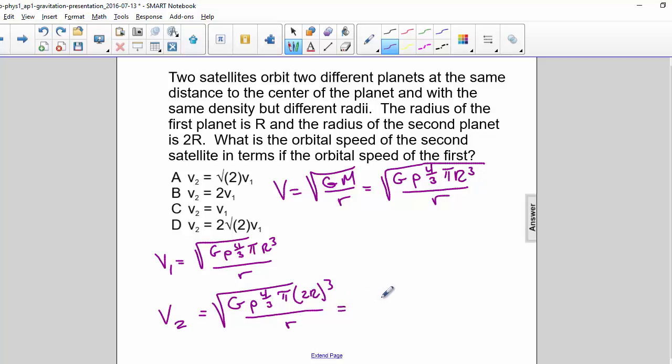So let's factor out the square root of 2 cubed and the rest of that would just be v1. So the square root of 2 cubed is equal to 2 times the square root of 2. So the correct answer is d, 2 square root of 2 times v1.